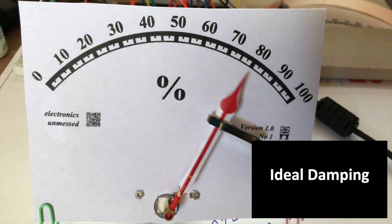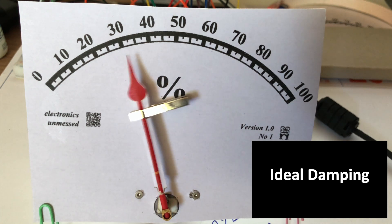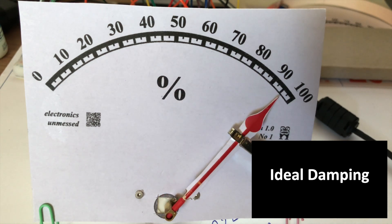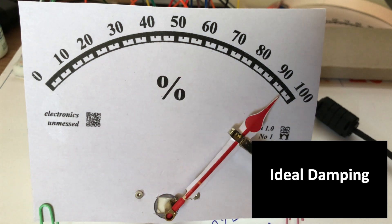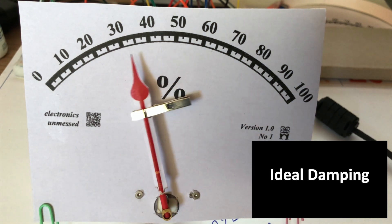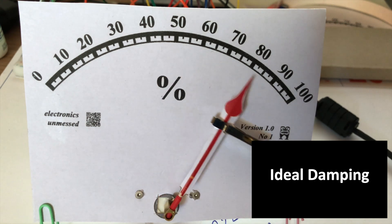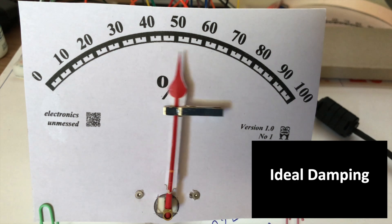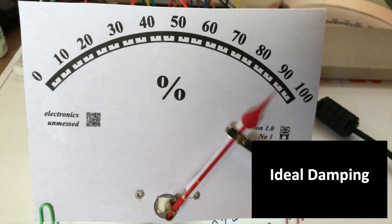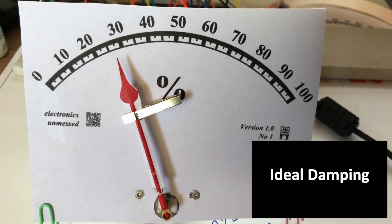Sorry, the pointer vibrates a bit because my test setup is not particularly stable. The pointer consists only of wire and paper. I can reveal in advance that the entire display instrument will later be realized in a 3D print, and I'm sure I can realize a stable pointer then.